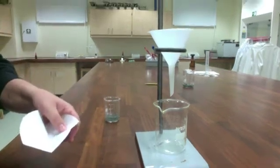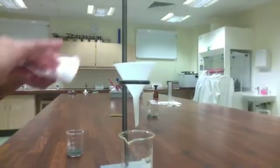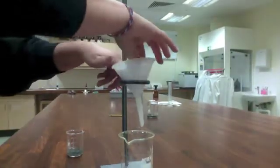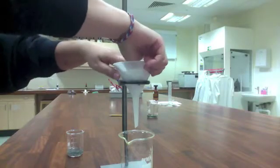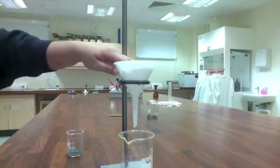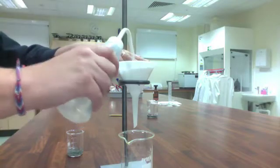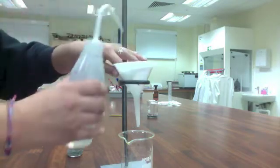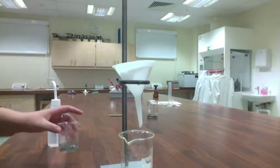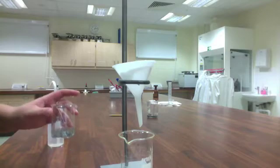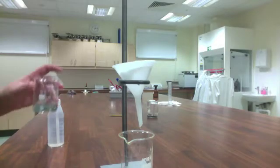What you want to do after that is put the filter paper into the funnel, and we want to make sure that it sticks down before I pour my solution from my beaker into it. And to do that, just take some distilled water and wet the edges there so that your filter paper stays attached to the sides of the funnel. As you can see, we've got some water coming through at the end.